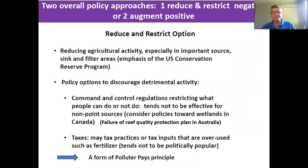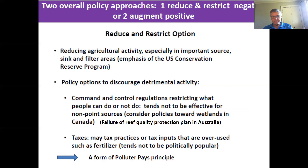There are two overall approaches. First, we can reduce and restrict negatives — things done in agriculture that have distinct negative effects on water quality. We can take efforts to reduce them or restrict them so they are not such a large negative force. We might want to restrict overall use of agriculture in an area, but also target where we have the biggest impact on improving water quality by focusing on the most important non-point sources of agricultural use.